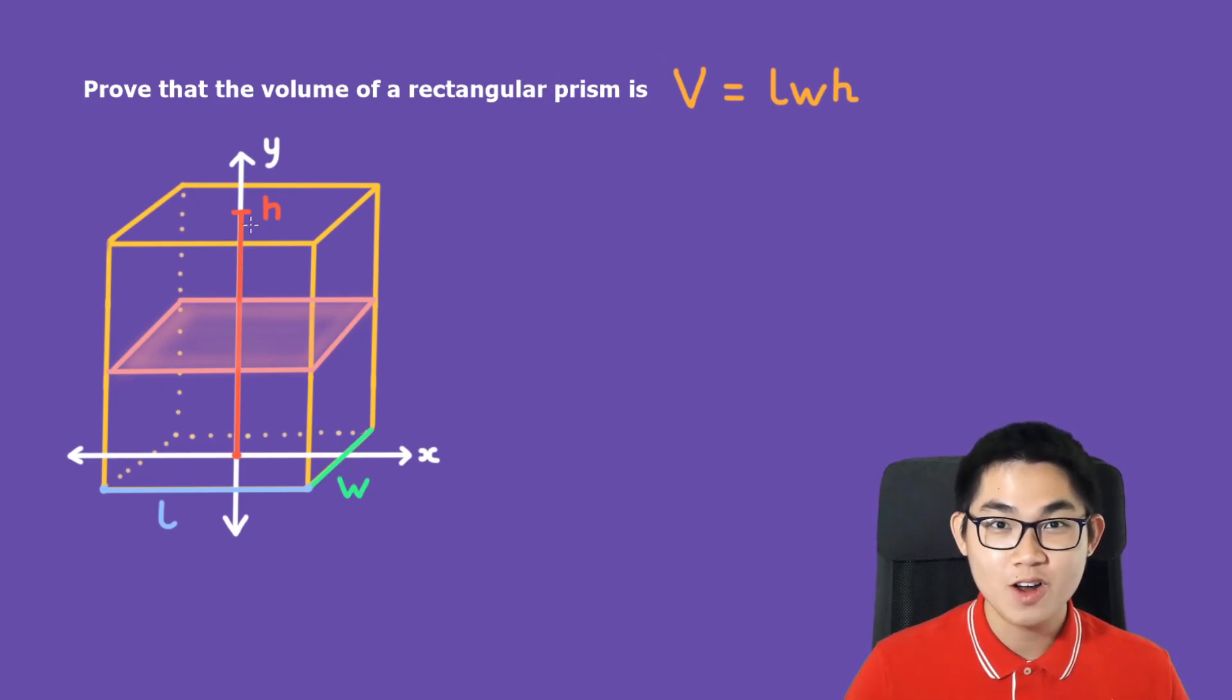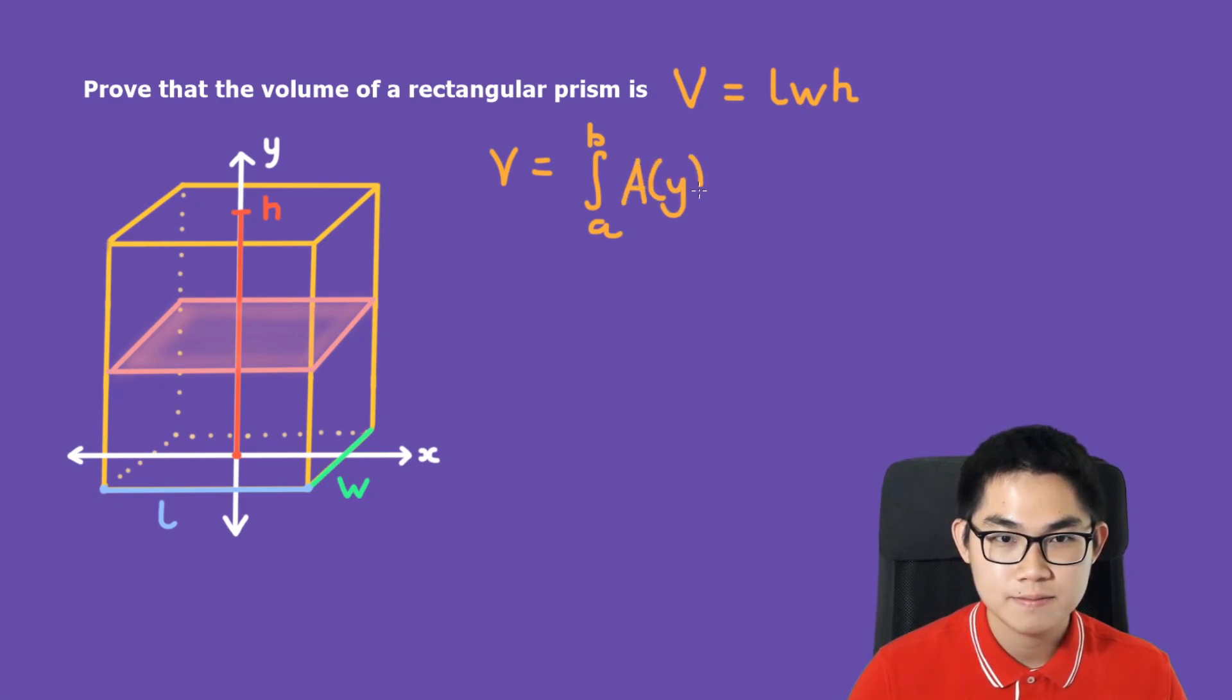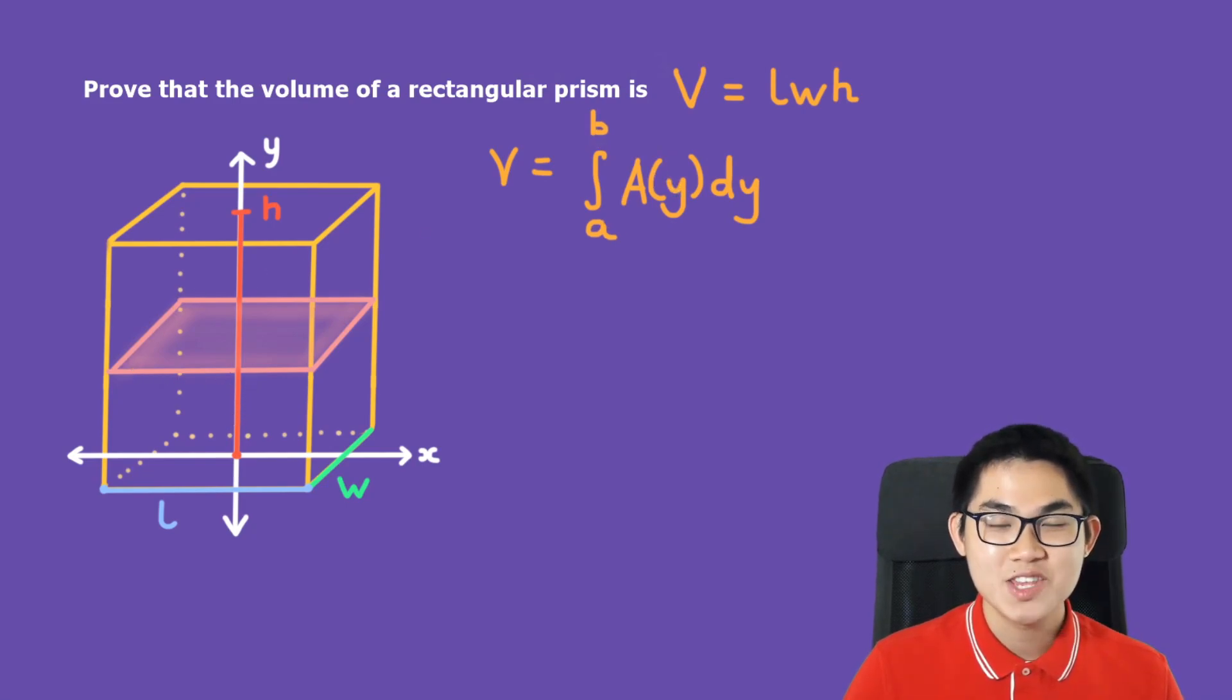In order to find the volume, you need to know the volume formula, which is V equals the integral from A to B of A of Y, DY, where A of Y is the area of the cross section.